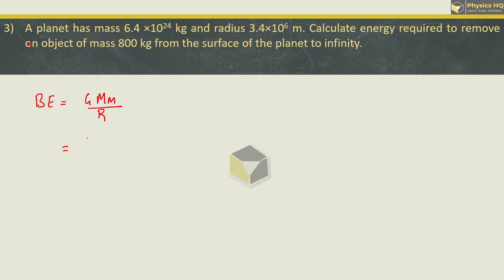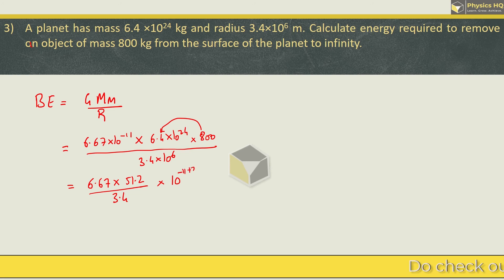G value is constant at 6.67 × 10⁻¹¹. Mass of this planet is 6.4 × 10²⁴, mass of the object is 800, divided by radius 3.4 × 10⁶. We need to solve this using logarithms, but first we can simplify some terms. 6.4 × 8 gives us 51.2 divided by 3.4.